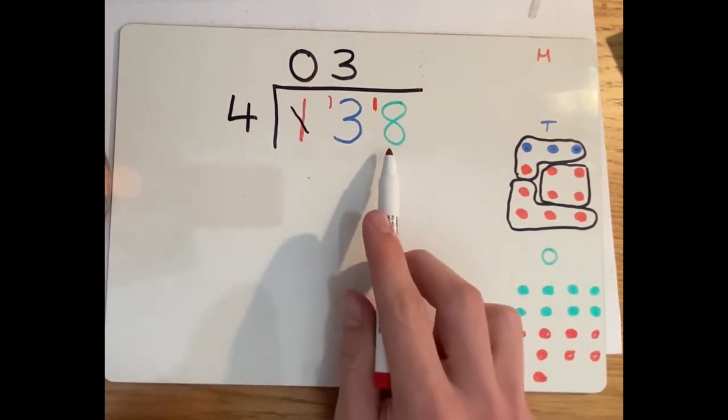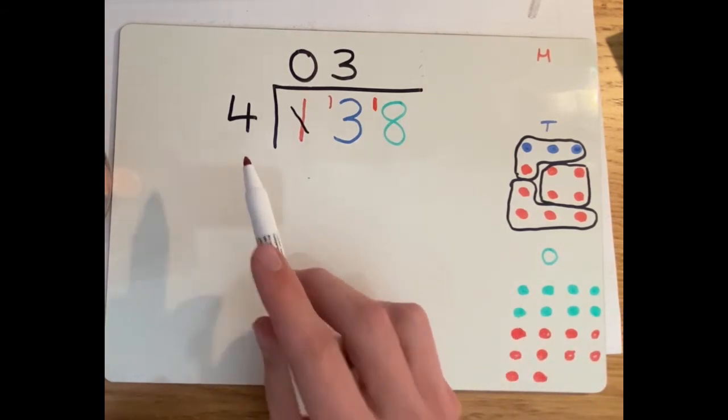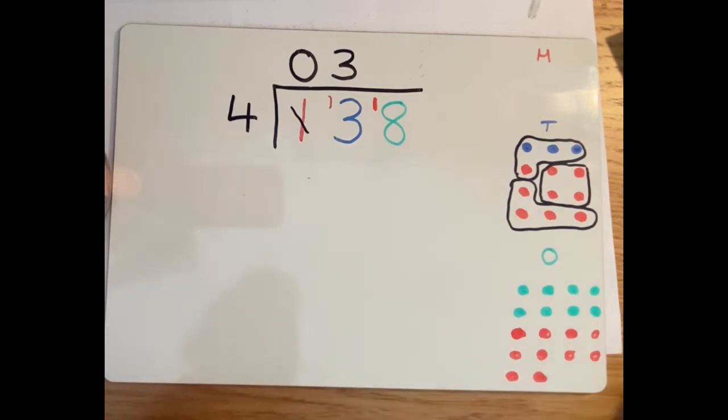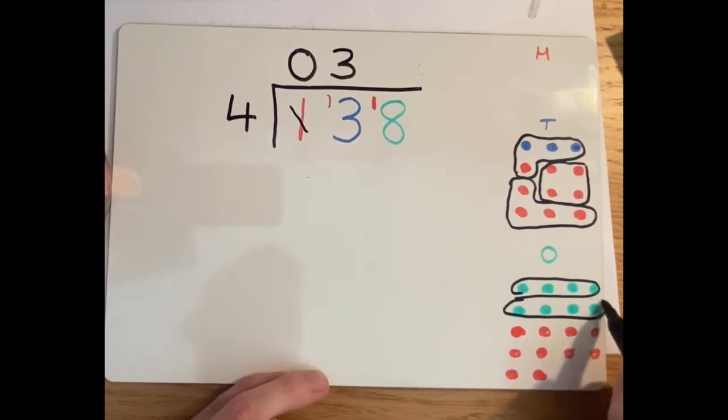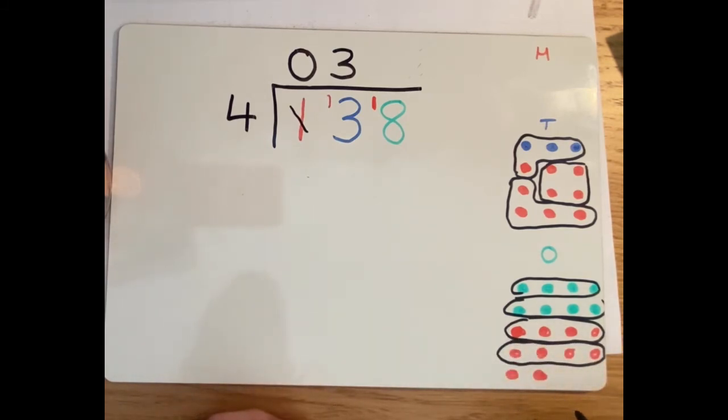Now we have 18 divided by four. Let's put those into groups of four. Got one, two, three, four. And we've got two left over, which we can't make another full group of four. So the amount of full groups we had was four.